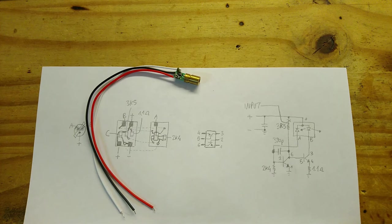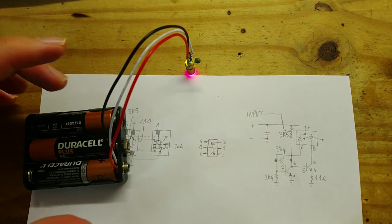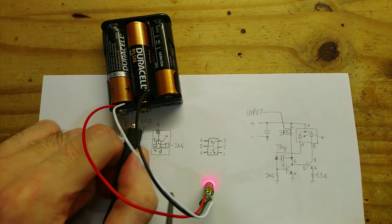So, let's see it in operation to see first of all that it is not oscillating and then we are going to try to modulate it. It turns on. That's good. And now I need to probe the cathode of the laser diode.